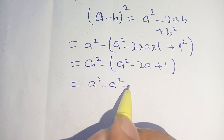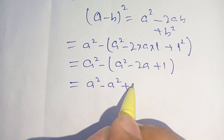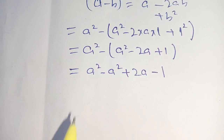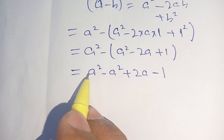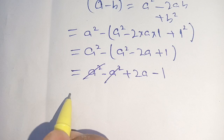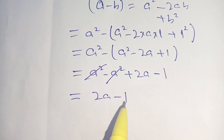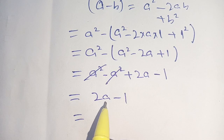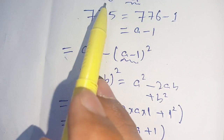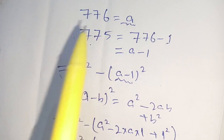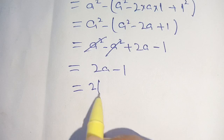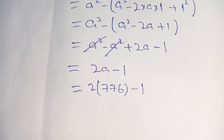It becomes plus 2A minus 1. Now A square appears with a positive sign and also with a negative sign, so they cancel out. Then it is equal to 2A minus 1. As we considered A is equal to 776, in place of A we substitute 776.